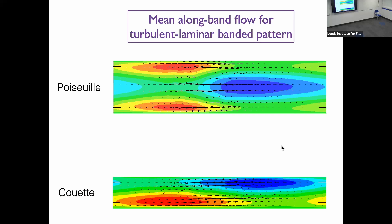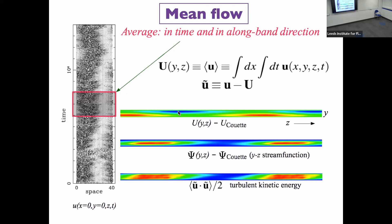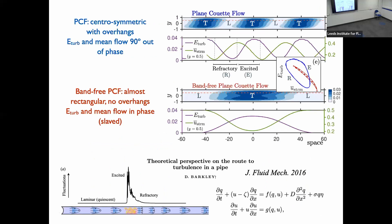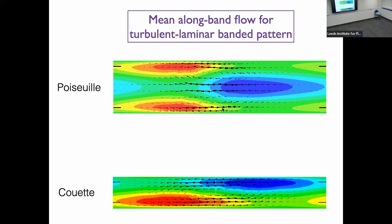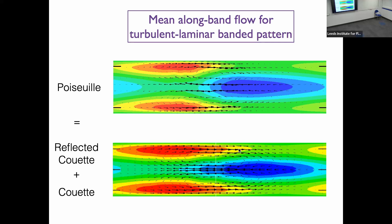The mean flow for Poiseuille flow looks very similar to Couette flow — blue and red, flow along the bands. If you reflect a Couette flow result and place the two halves together, cutting out the wall between them, you see it's essentially the same thing. Poiseuille flow really is two Couette flows.